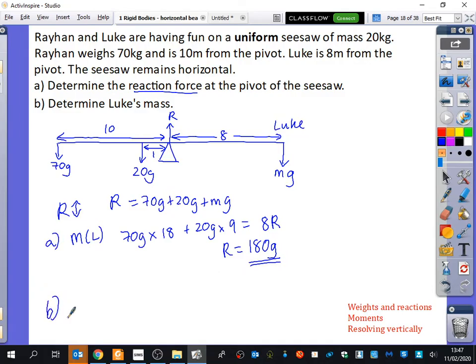If you multiply g out, you'd have to round it, wouldn't you, to two or three significant figures. But I'm happy just to leave it as 180g, because the whole question seems to be in terms of g. That was for part a. Now, what do you think is the best thing to do for part b? Do what Sufian originally said here. We can say that r equals 70g plus 20g plus mg. We've already done that for this part here. So we've said that r is 180g equals 90g plus mg. So clearly, m is equal to 90.